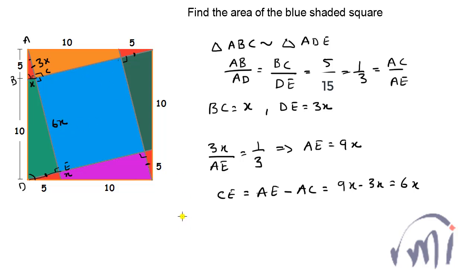Each side of the blue square is equal to 6x, so the area of the square will be 6x multiplied by 6x, that is 36x². So the area of this blue shaded square will be 36x². Now we need to find x².